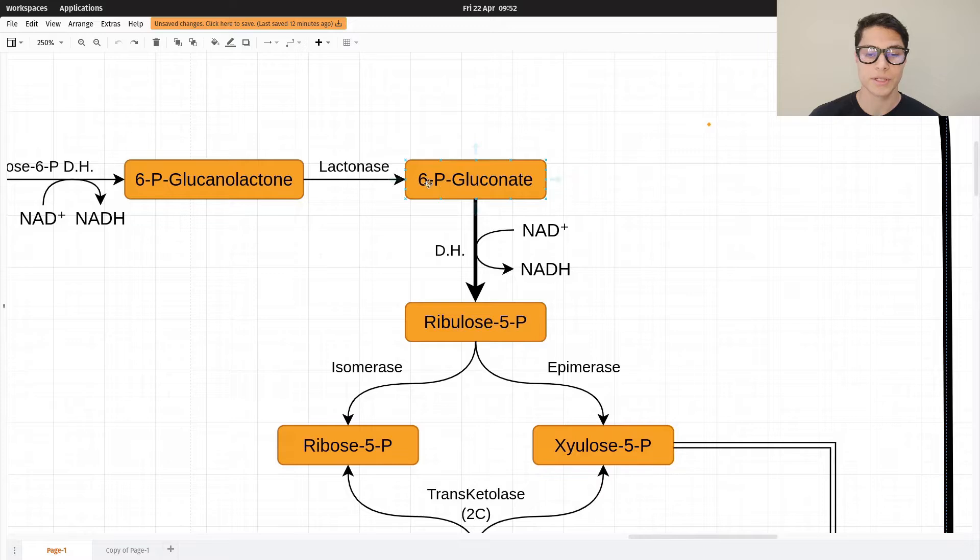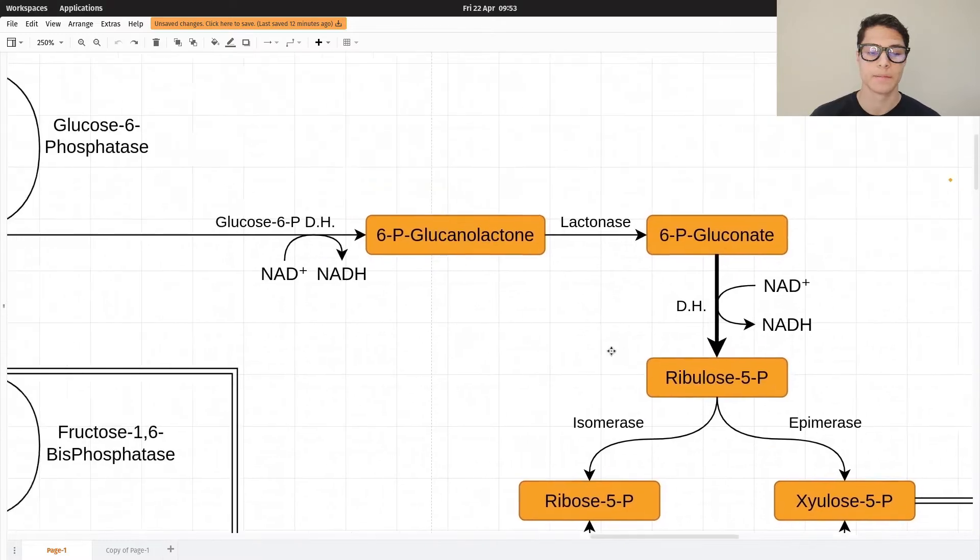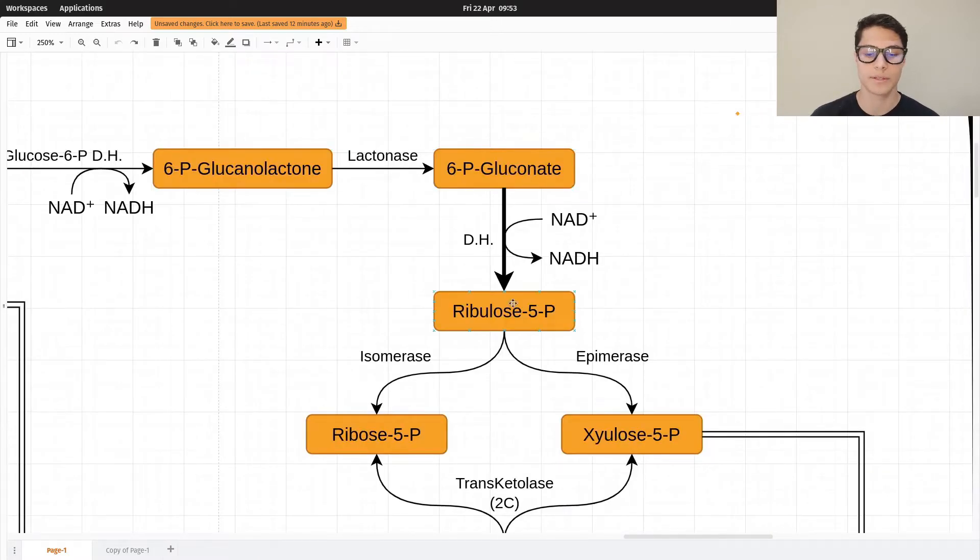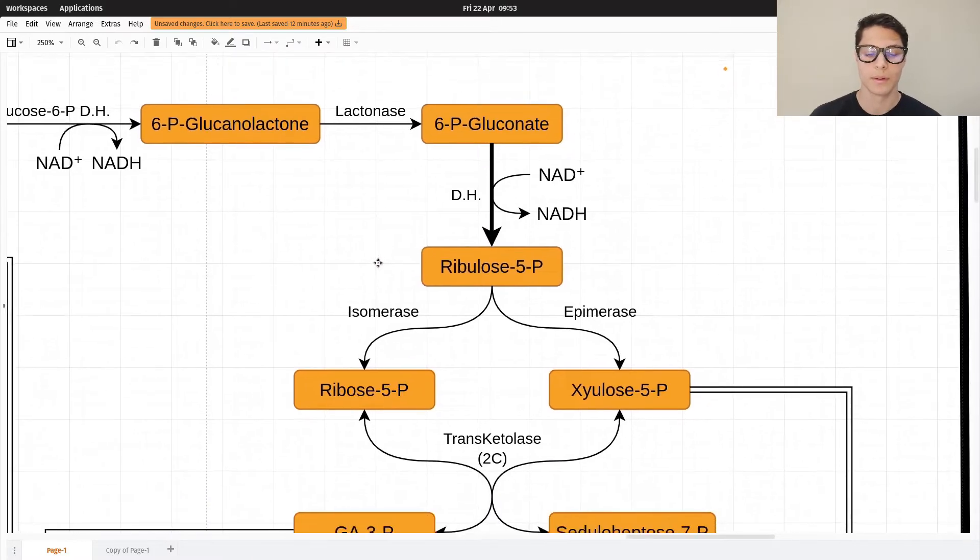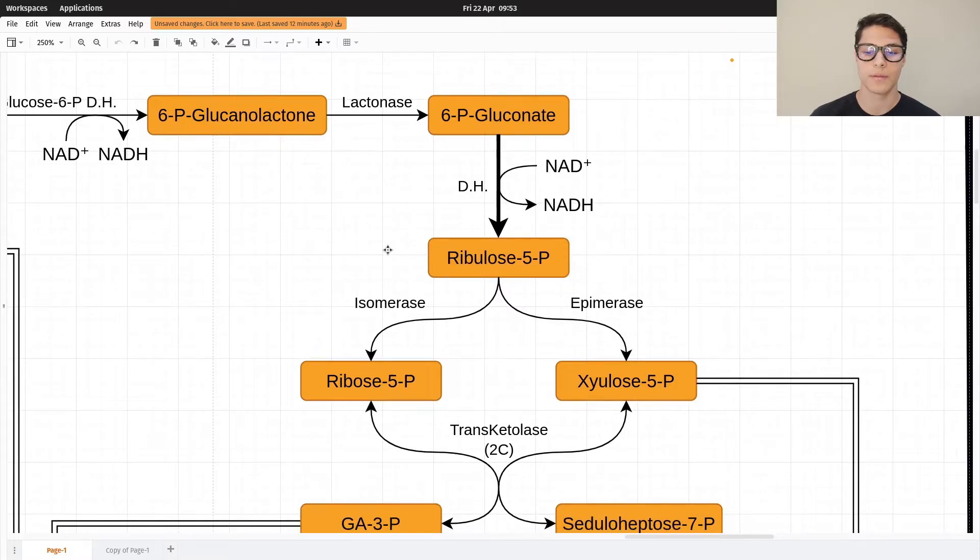6-phosphogluconate is then converted into ribulose 5-phosphate via 6-phosphogluconate dehydrogenase, another NAD+ to NADH, and this step is not reversible. This is called the oxidative phase of the pentose phosphate pathway.